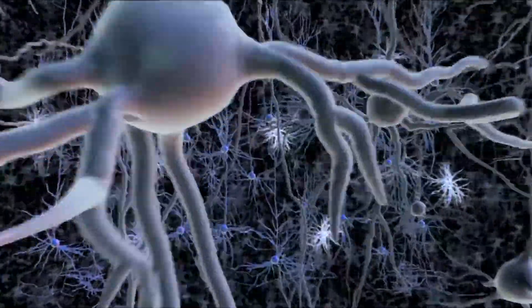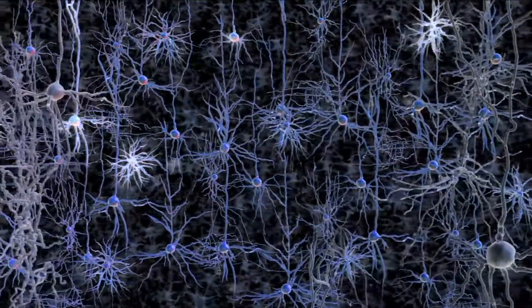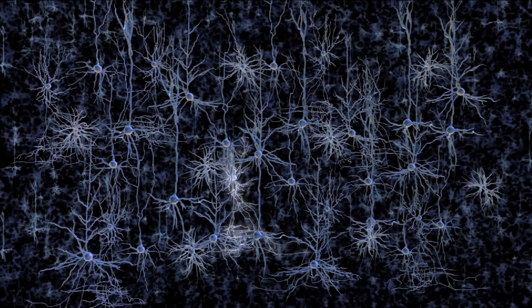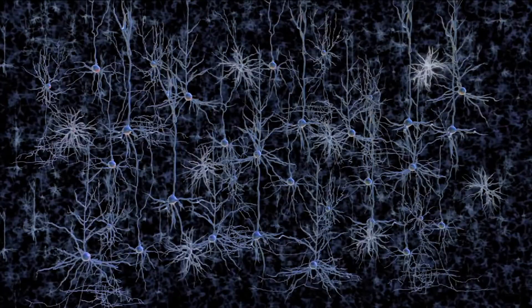Neurons communicate with each other using both chemical and electrical signals. When a neuron is activated by chemical messengers, it produces an electrical pulse that results in similar chemical signals being sent to other neurons to which it is connected.